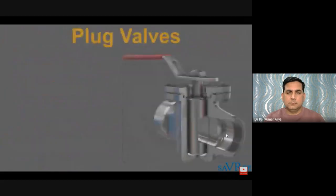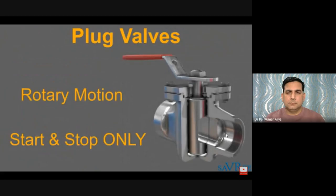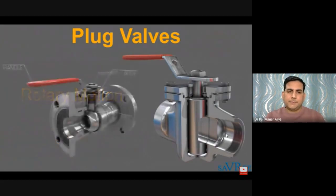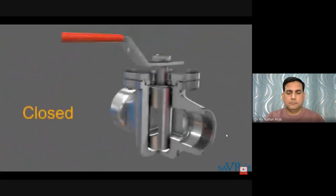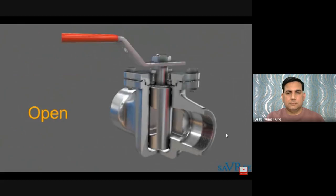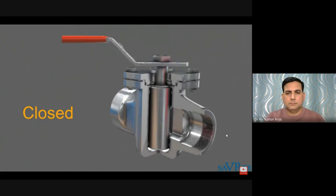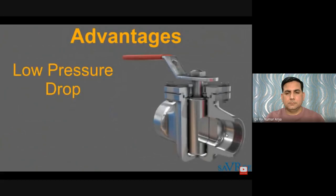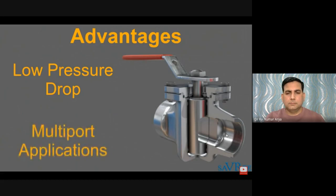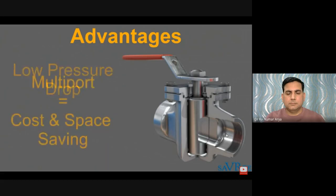A plug valve is a rotary motion valve used to start or stop flow. The name is derived from the shape of the disc, which resembles a plug. The design is very similar to a ball valve. In the open position, the passage in the plug lines up with the inlet and outlet ports. When turned 90 degrees, a solid part of the plug blocks the ports and stops flow. When fully open, pressure drop across the valve is very low. Plug valves are easy to adapt for multi-port applications, potentially eliminating the need for up to four conventional shut-off valves, making them a considerable cost and space saving.